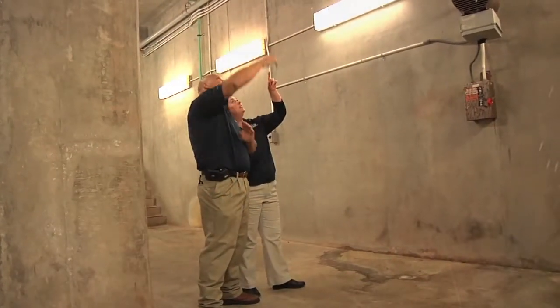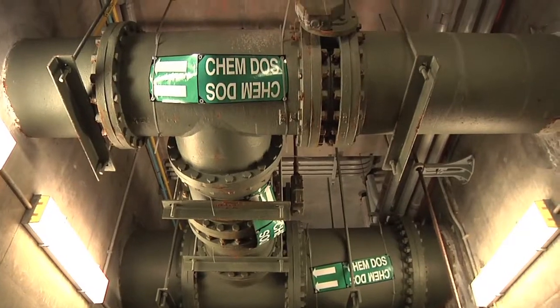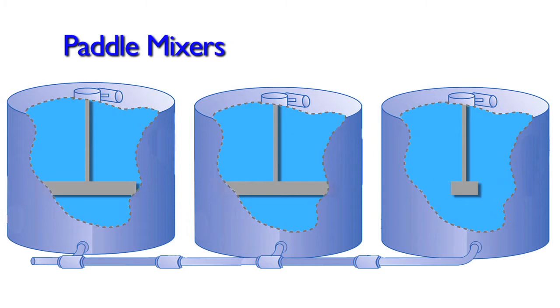The flocculation process can start as water leaves the flash mix chamber or tank and typically moves into a series of two or more very slow moving paddle mixers. The second paddle is sometimes slower than the first.